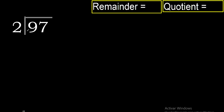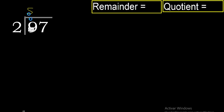97 divided by 2. 9 is not less than 2, therefore with 9: 2 multiplied by 5 is 10 — excessive. Multiplied by 4 is 8. 8 is the closest. 9 minus 8 is 1.